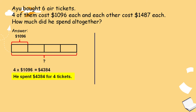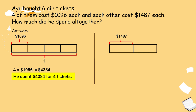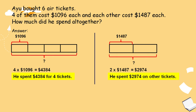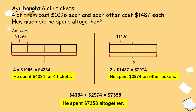Next, find the cost of the other tickets. Ayu bought 6 air tickets total and we found 4 tickets, so 2 tickets are left. Each costs $1,487. Multiply 1,487 times 2 equals $2,974. So he spent $2,974 on the other tickets. The question asks how much did he spend altogether, so add $4,384 plus $2,974 equals $7,358. He spent $7,358 altogether.